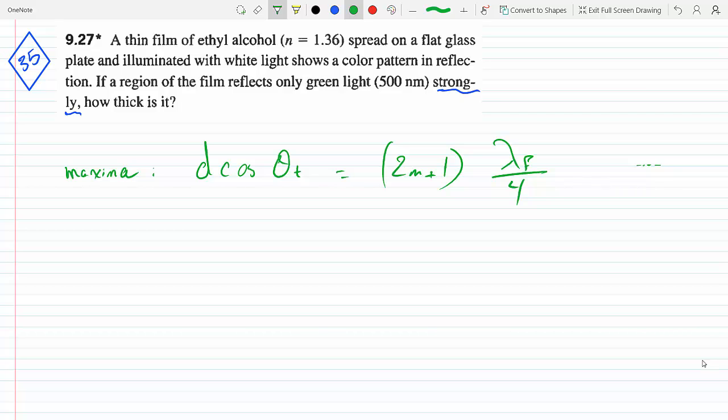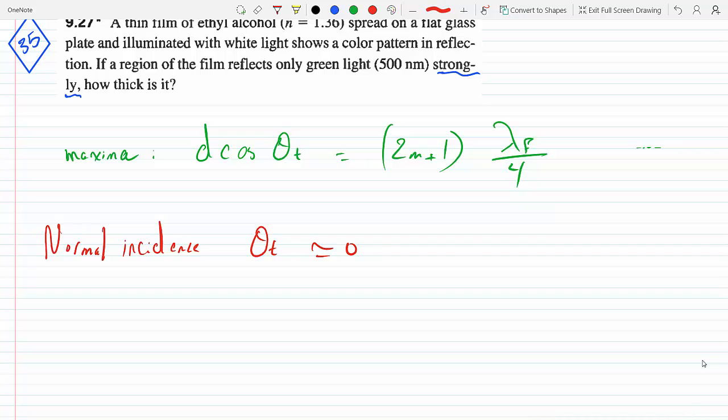This is for a maximum at near normal incidence. We have normal incidence, so theta t is about zero. And since we want the lowest thickness we can possibly have, we're going to set m equals zero.